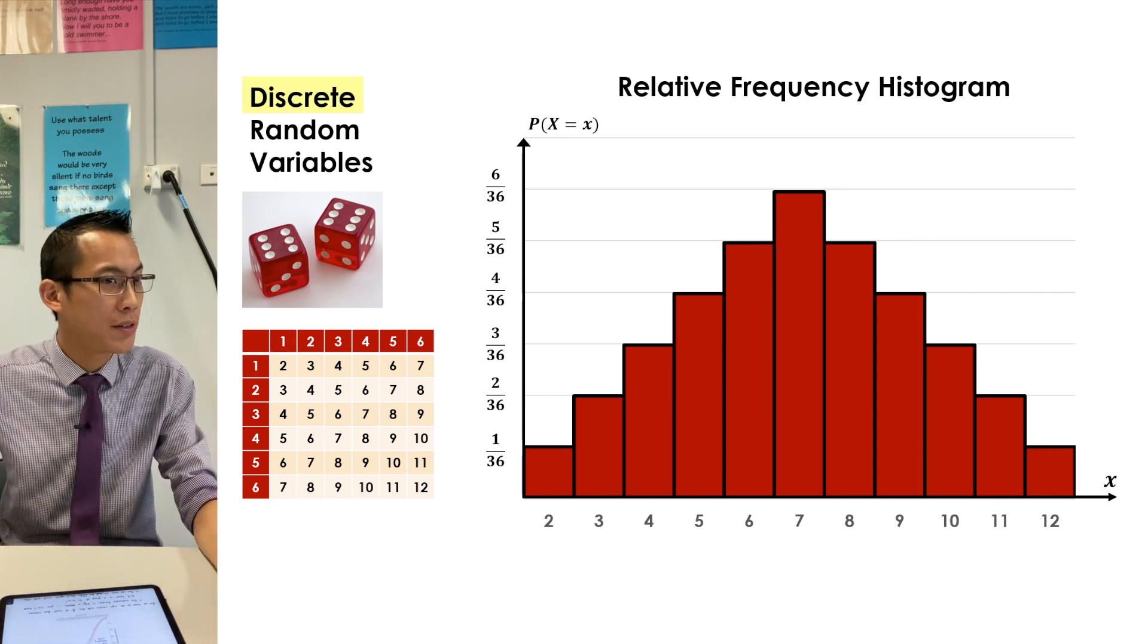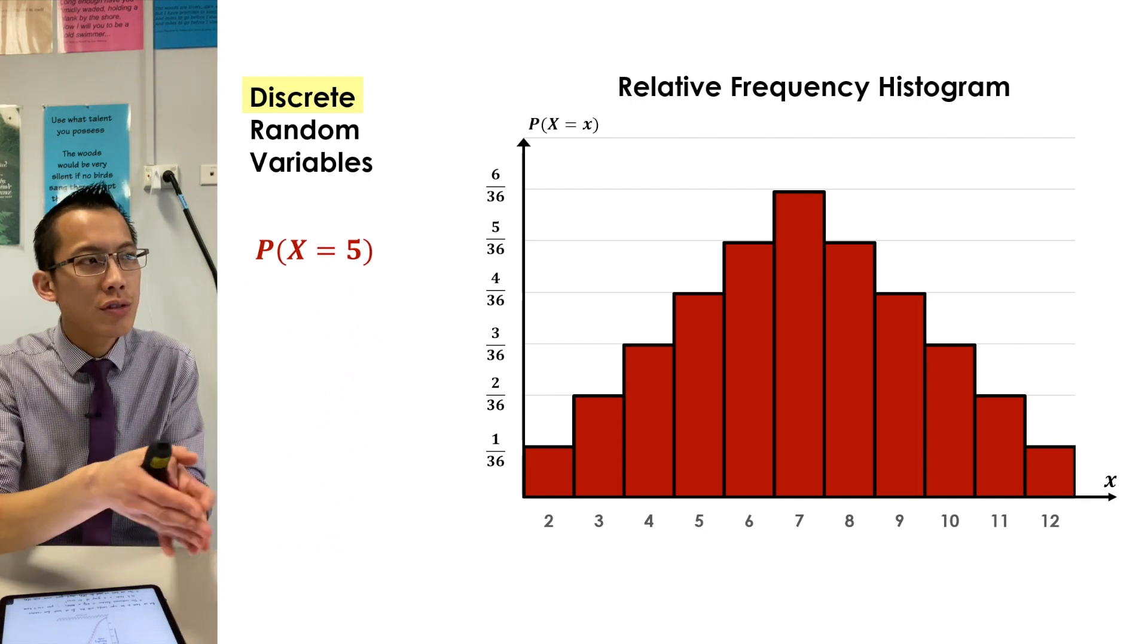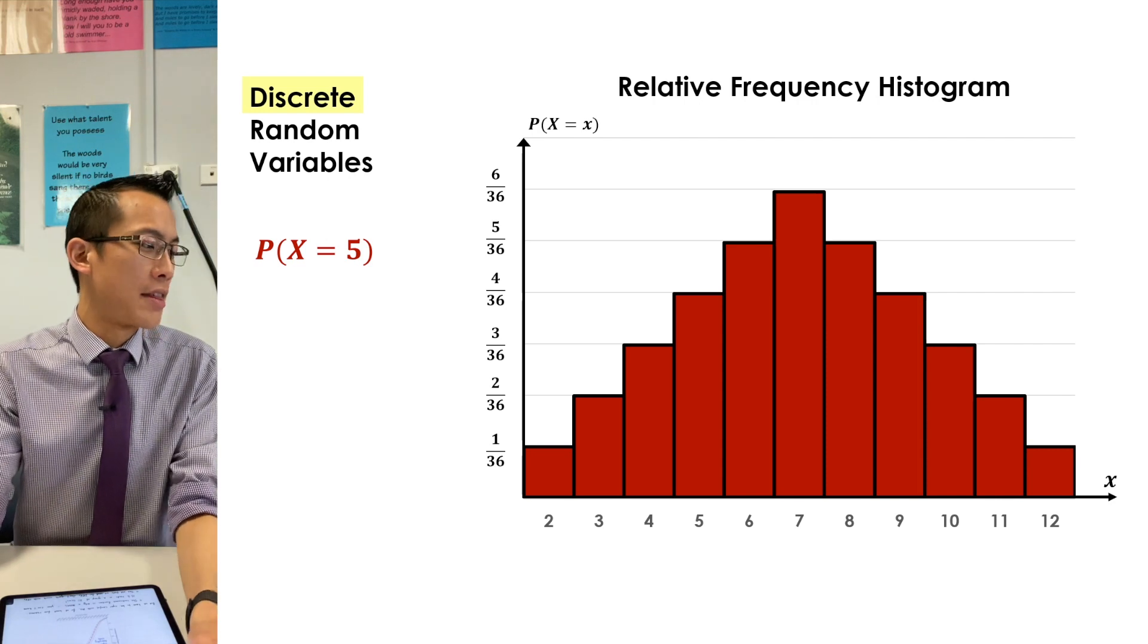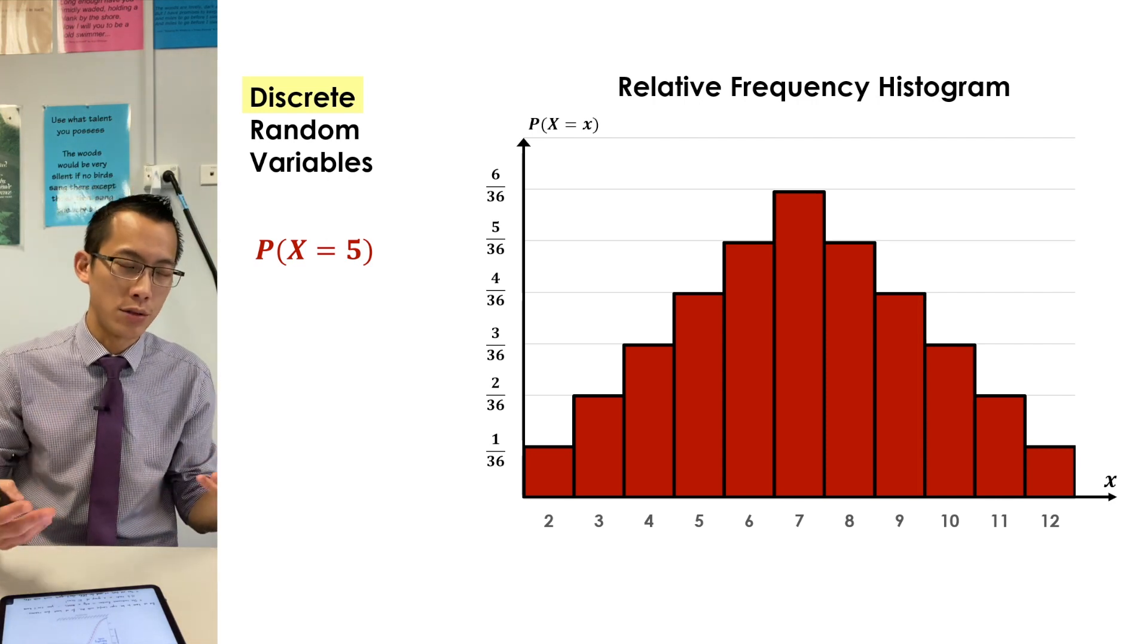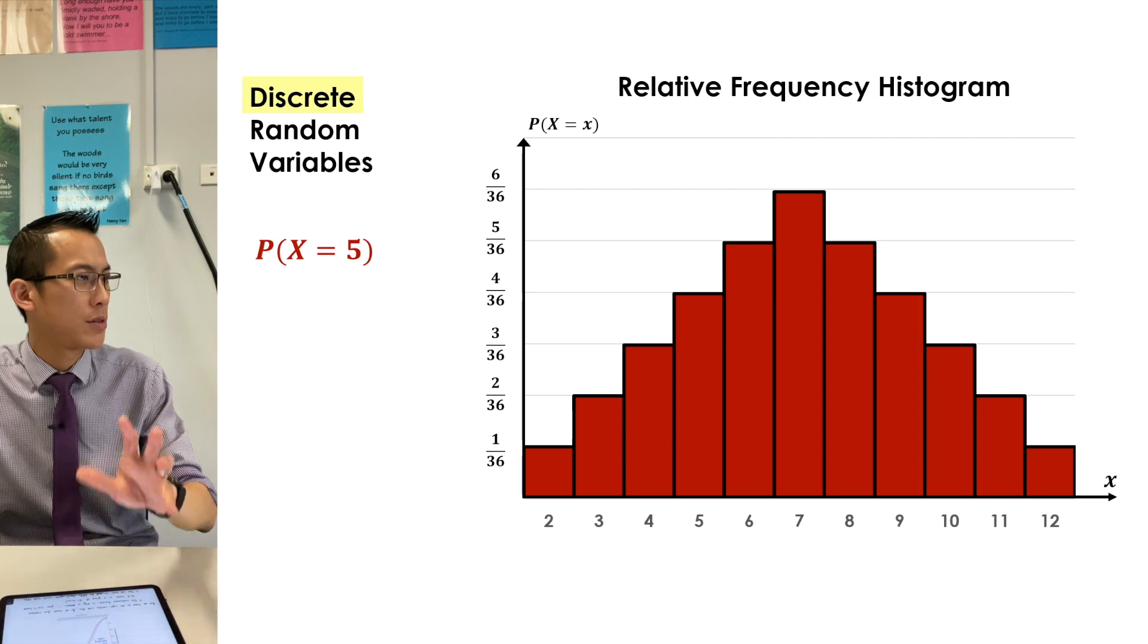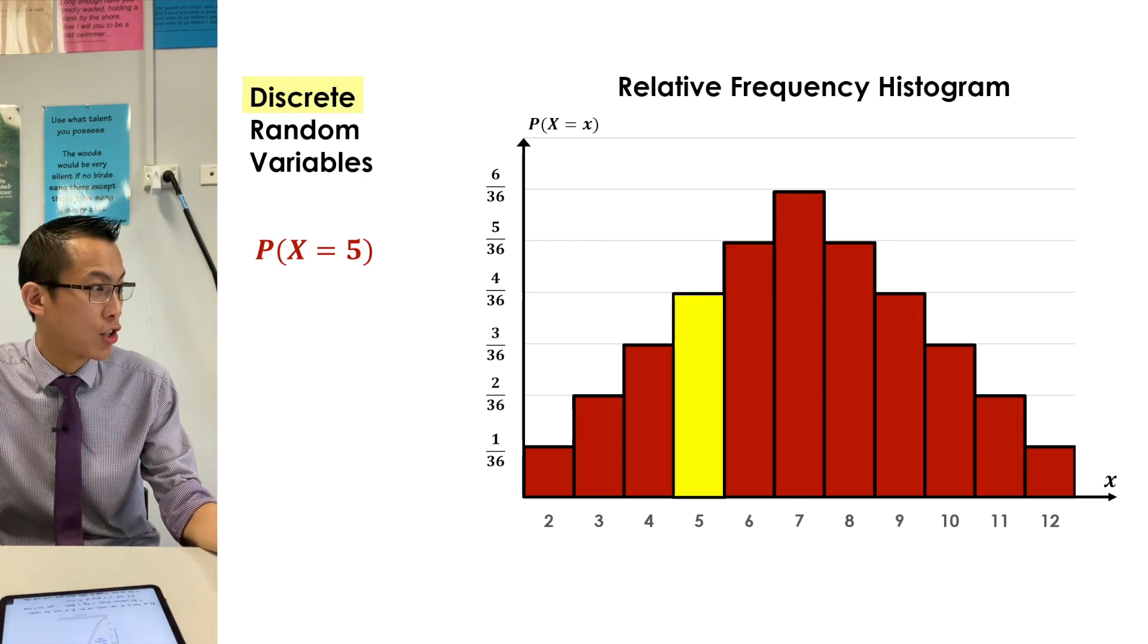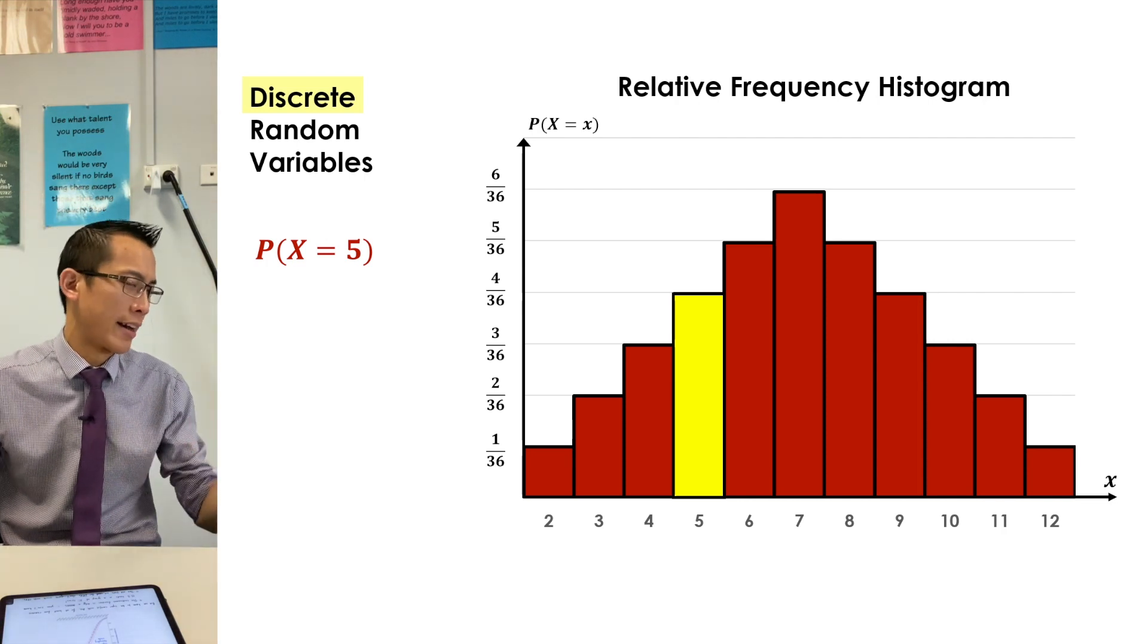We got quite used to using these relative frequency histograms to answer questions about probability. Let me give you an example. Can you use this table to answer the question: what's the probability that I'm going to roll a five? I think we all know we can look at the relative frequency histogram and say, just look at the relevant column. That goes up to 4 out of 36, you'd simplify that to 1 over 9, so no problem, I can answer that just by looking at that individual column.